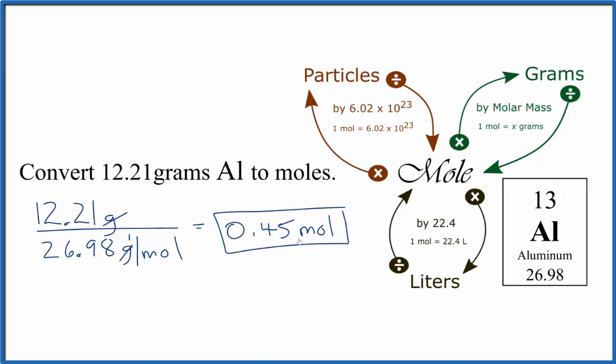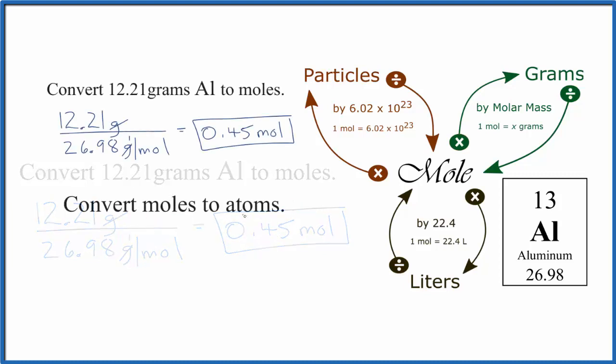Now let's convert moles of aluminum to atoms of aluminum. So when we're going from moles to atoms, what we're talking about is going from moles to particles. Particles are atoms, molecules, or ions. When we go from moles to particles, or really moles to anything, we multiply.